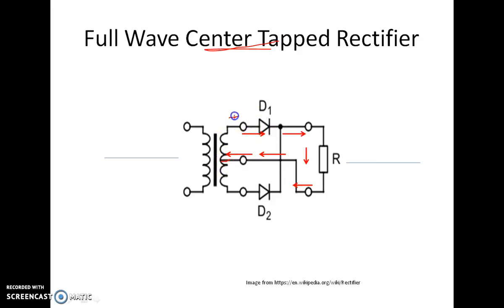The polarity in positive half cycle, which is generated due to this center-tapped, is as shown in the diagram. In positive half cycle, D1 is on and D2 is off because D1 is connected to positive and D2 is connected to negative.